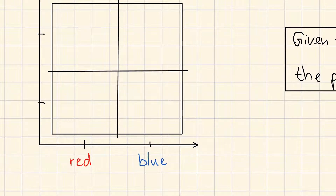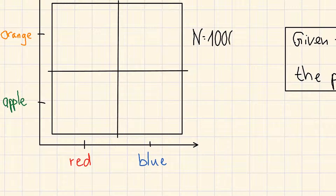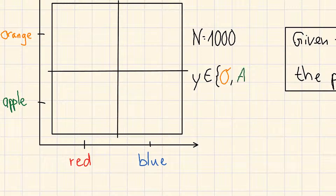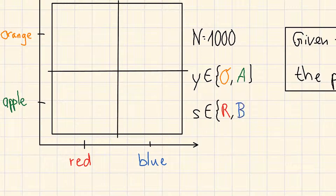So, how often did I pick from the red box? First we have to establish notation. We say n is the number of times we repeat the experiment — we said we want to pick a thousand times. The observation we can make from the data point we call y, where y is an element of {o, a}, standing for orange and apple. We also note the box from where we picked, calling it s for source, where s is an element of {r, b} — the red box or the blue box.